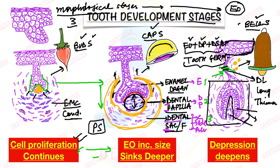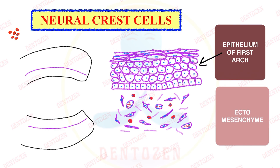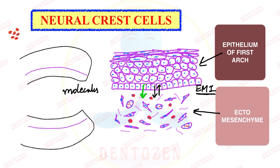Now let's look at what happens next. The two structures — ectoderm from the epithelium of the first arch, and ectomesenchyme derived from neural crest cells — interact with each other. Cells communicate through molecular signaling: the epithelium releases certain molecules as signals to the ectomesenchyme, and the ectomesenchyme releases molecules back to the epithelium. This is called epithelial-mesenchymal interaction, and it occurs through molecular signaling.